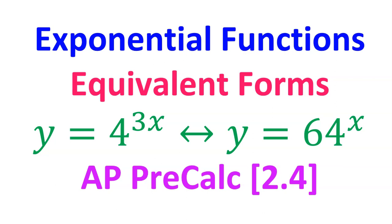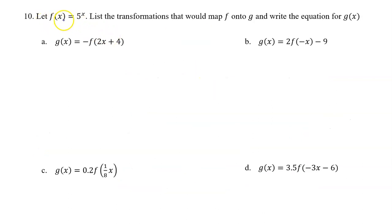This video is about writing exponential functions in equivalent forms. This is AP Precalculus topic 2.4. Number 10: let f of x equal 5 to the x power. List the transformations that would map f onto g and write the equation for g of x.